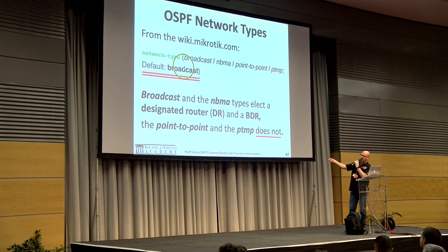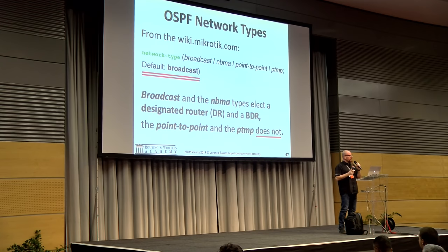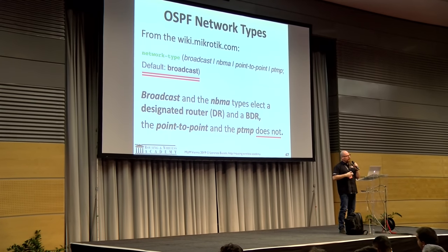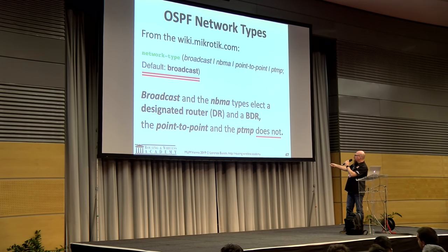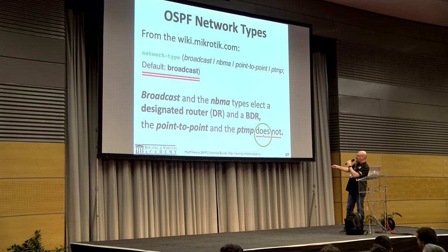If you don't change the settings, the network type will be broadcast. Broadcast and NBMA network types elect a Designated Router (DR) and a Backup Designated Router (BDR). Point-to-point and point-to-multipoint do not elect a DR or BDR. So two of the four network types have DR and BDR; the other two do not.